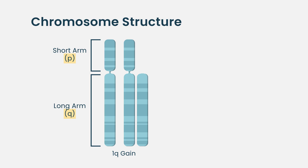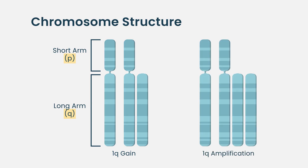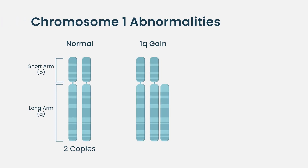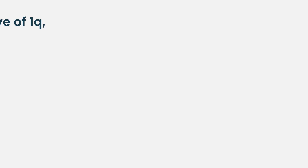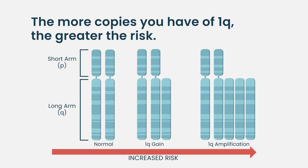Some people say 1Q gain and others say 1Q amplification. In the strict sense, 1Q gain means you just have one extra copy — three copies of that chromosome. Amplification means you have four or more copies. We use these terms interchangeably a lot, but the more copies you have of that chromosome, the more effect it's going to have.